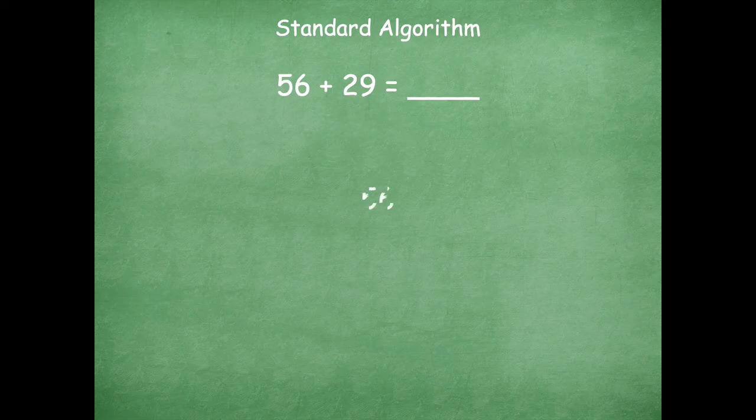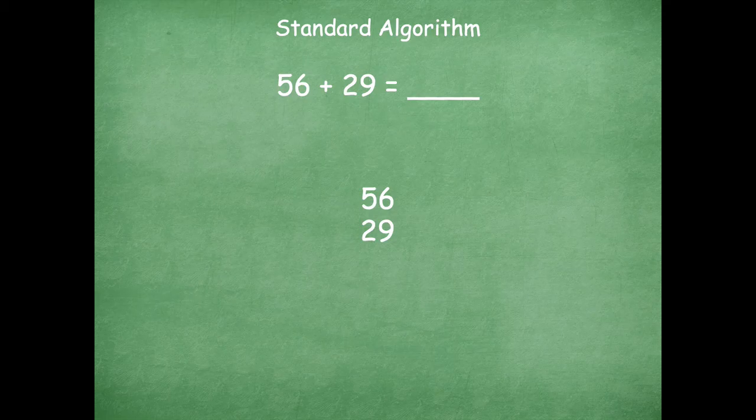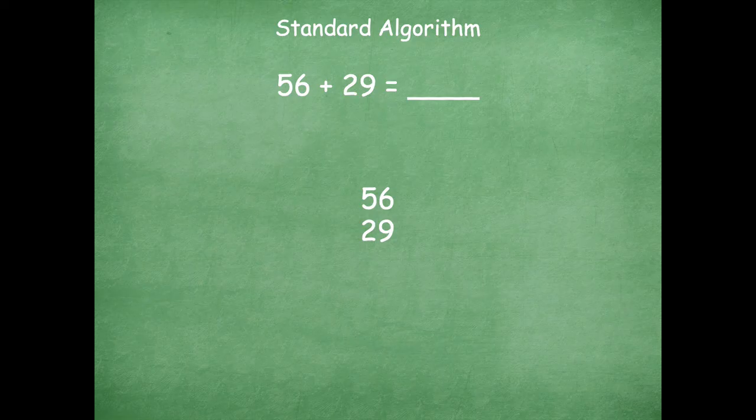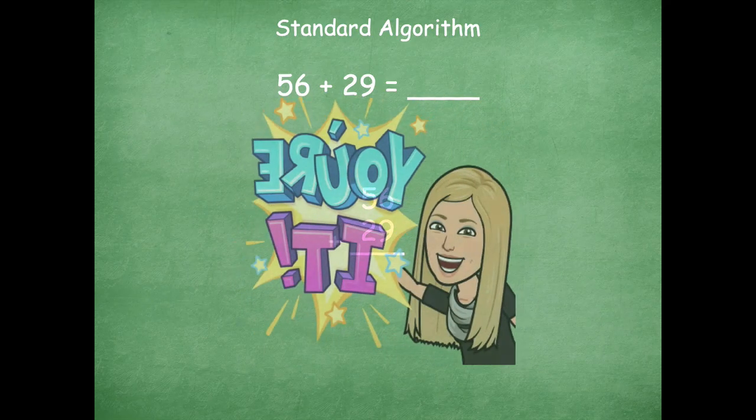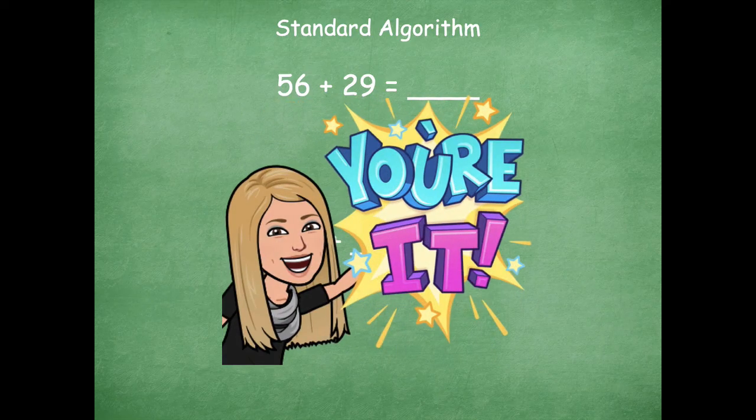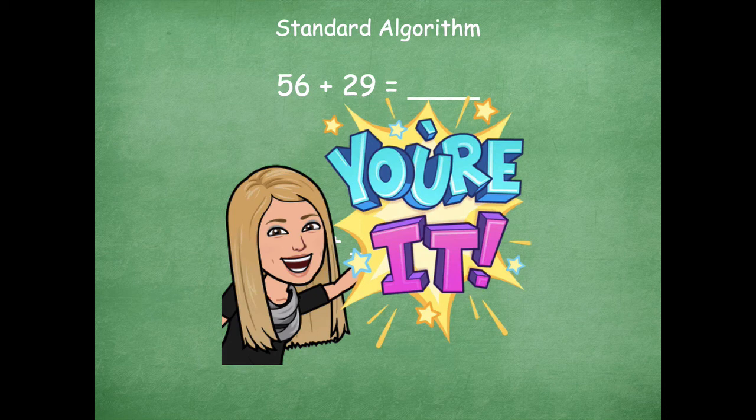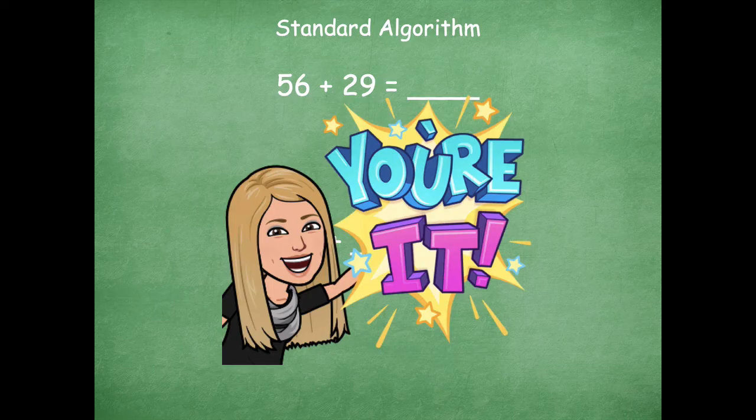So let's do that first. So we have 56, we have 29. Notice how they're lined up nice and neat. The six and the nine are both in the ones place so they're lined up neatly underneath each other, and the same thing with the tens place with the five and the two. Now we're going to add those together. But wait, tag you're it. It's your turn to solve this problem. So pause the video, work on your dry erase board to solve 56 plus 29, and then click play when you're ready to go over it together.